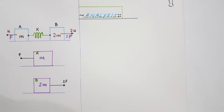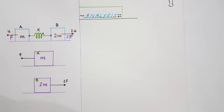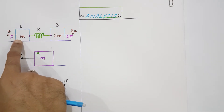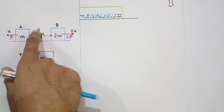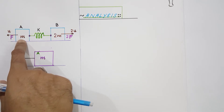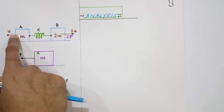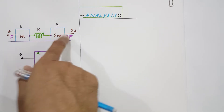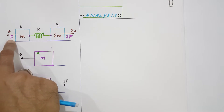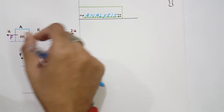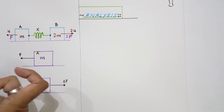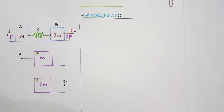Hello, my dear students, welcome everyone to the channel Physics is Fun. Today we have another very interesting problem — a spring-block system. There are two blocks having masses m and 2m, connected by a spring whose spring constant is k. Block A has mass m, block B has mass 2m. Initially they were moving with velocities u and 2u respectively. A constant force F is applied on block A and 2F on block B. The question is: what will be the maximum extension of the spring?